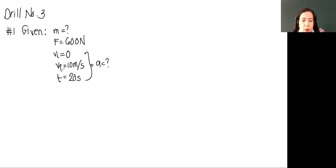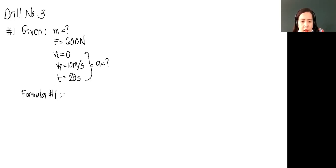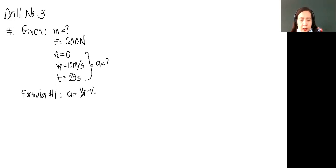There will be two formulas here. Formula number 1: we need to solve for the acceleration. You already know that when the velocities are given, the formula will be acceleration is equal to final velocity minus initial velocity divided by time.